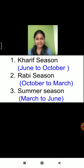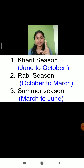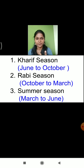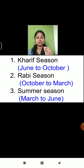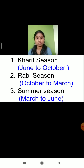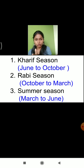In the last lecture, we learned that there are total 3 seasons which exist in India. What are those 3 seasons? Kharif season, Rabi season, and Summer season. The season which starts from June to October, we call it as Kharif season. The season which starts from October to March, we call it as Rabi season.